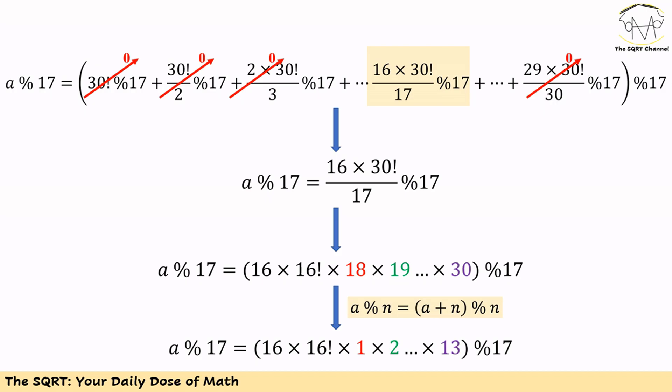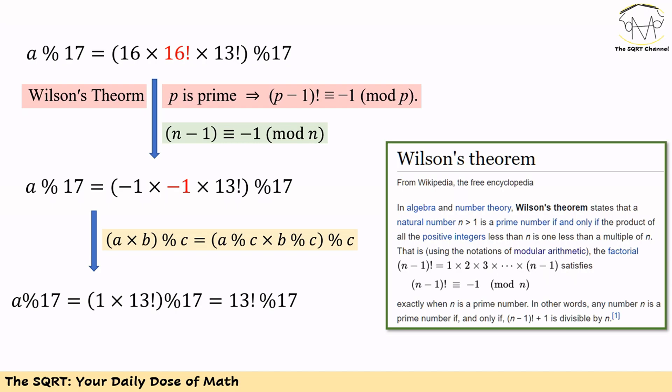Now, 18 mod 17 is 1, 19 mod 17 is 2, and continuing this way, 30 mod 17 is 13. So the product 18 × 19 × ... × 30 mod 17 reduces to 1 × 2 × ... × 13, which is 13 factorial. Applying mod 17 again, we get a mod 17 equals 16 times 16 factorial times 13 factorial, mod 17.